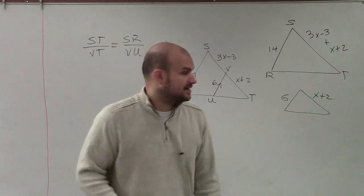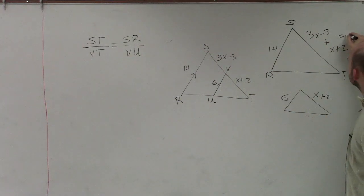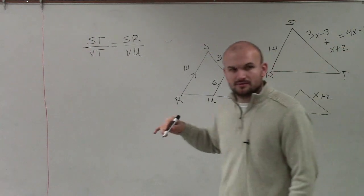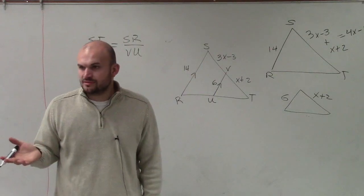So now what I need to do is just plug in their side lengths. Well, when you combine this, 3x minus 3 plus x plus 2, that gives you 4x minus 1, correct? Would everybody agree with that when I combine those? I combine the x's and combine the numbers? Does everybody agree with that?